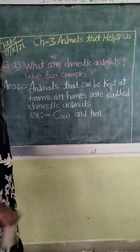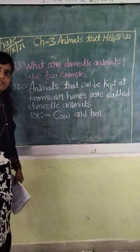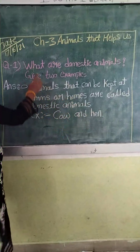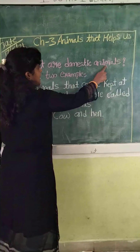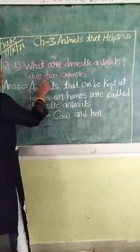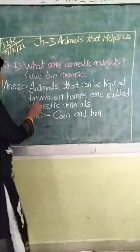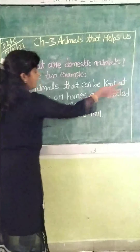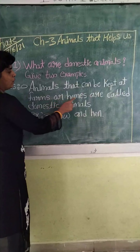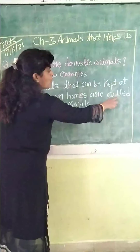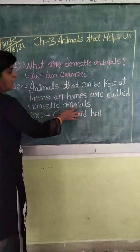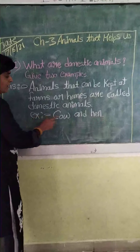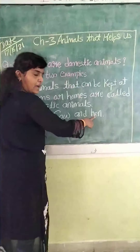Let me read the full question and answer. Question: What are domestic animals? Give two examples. Answer: Animals that can be kept at farms or homes are called domestic animals. Examples are cow and hen.